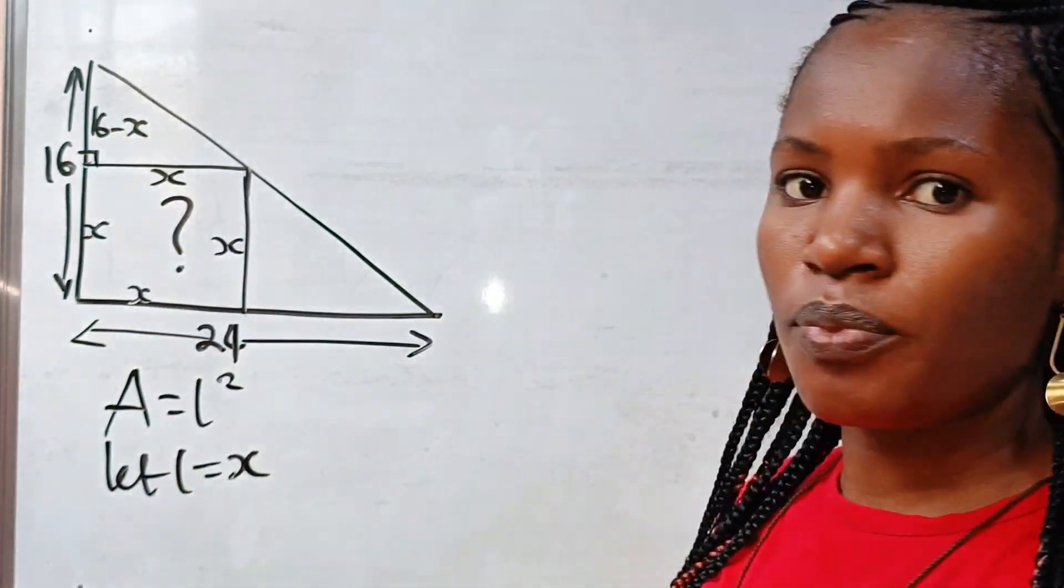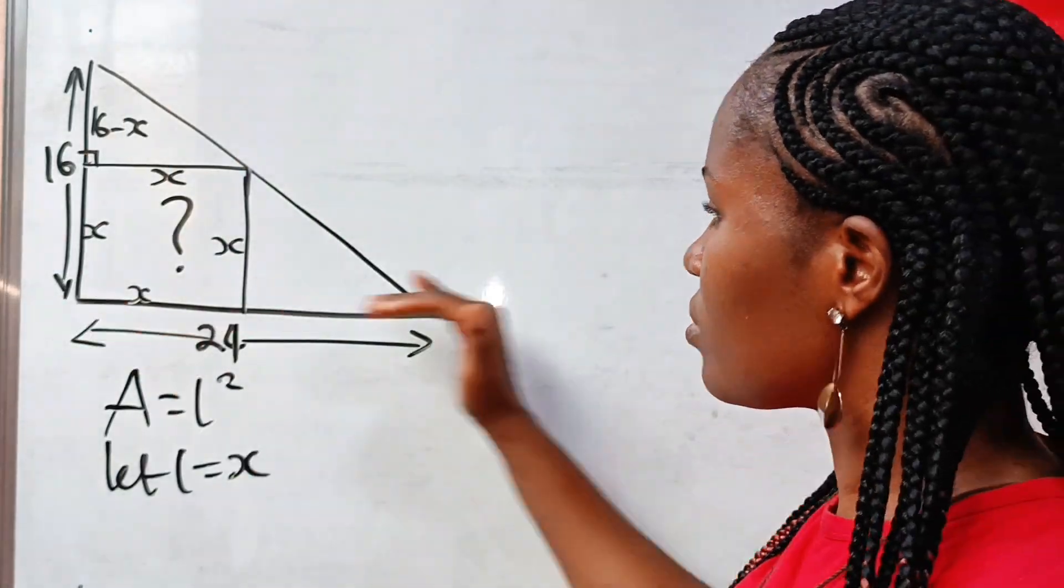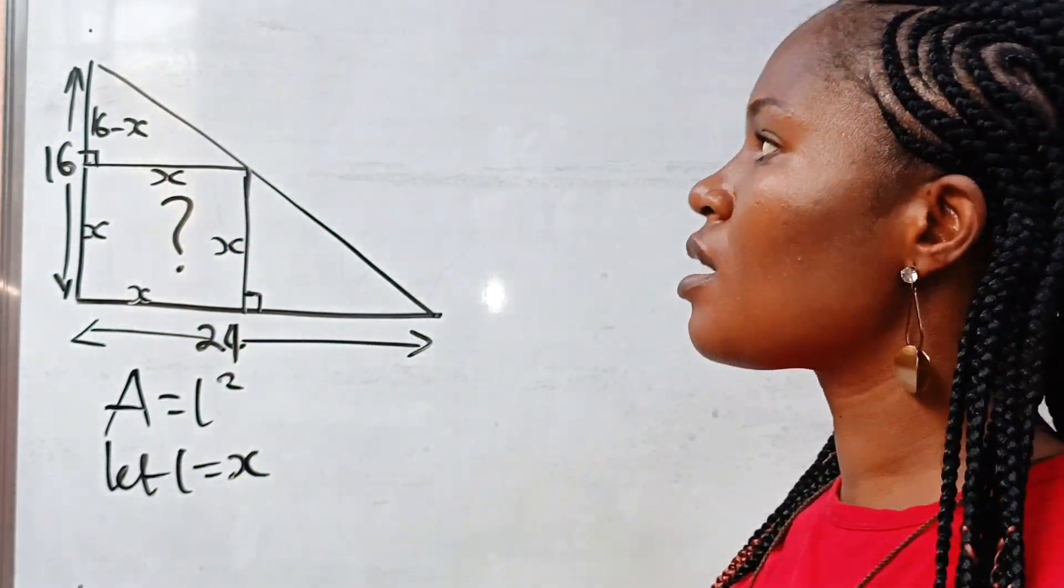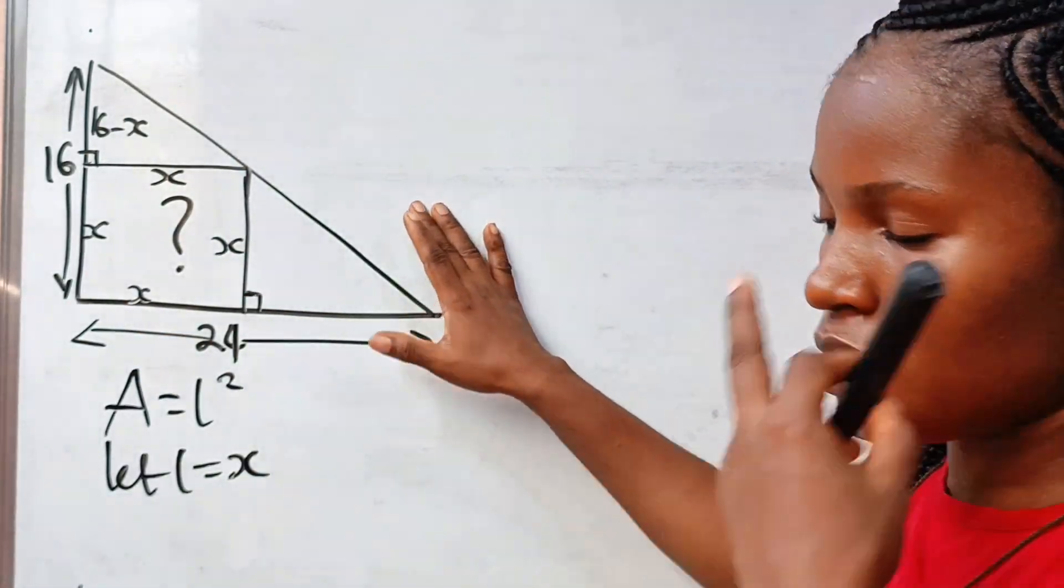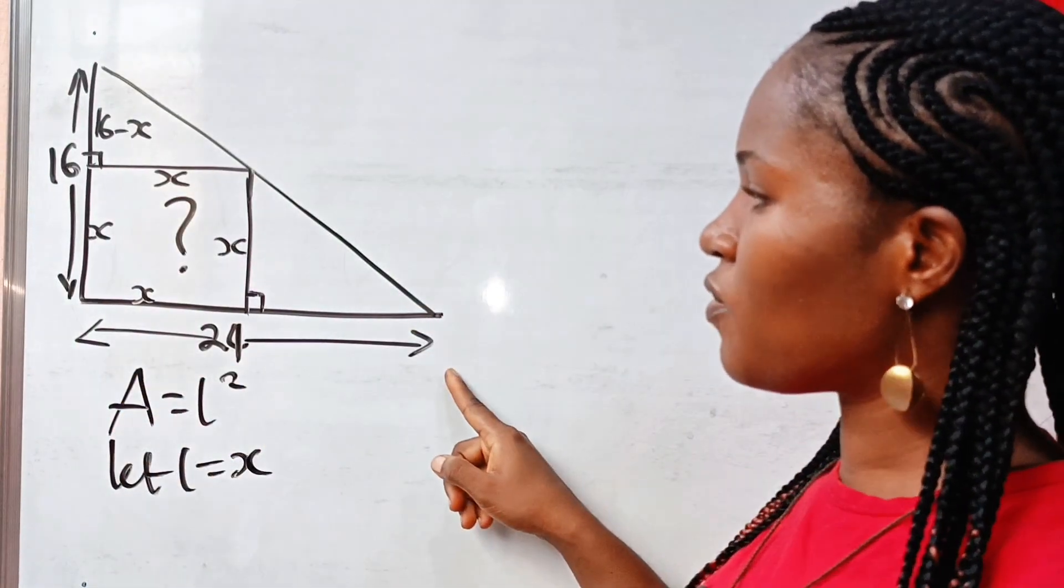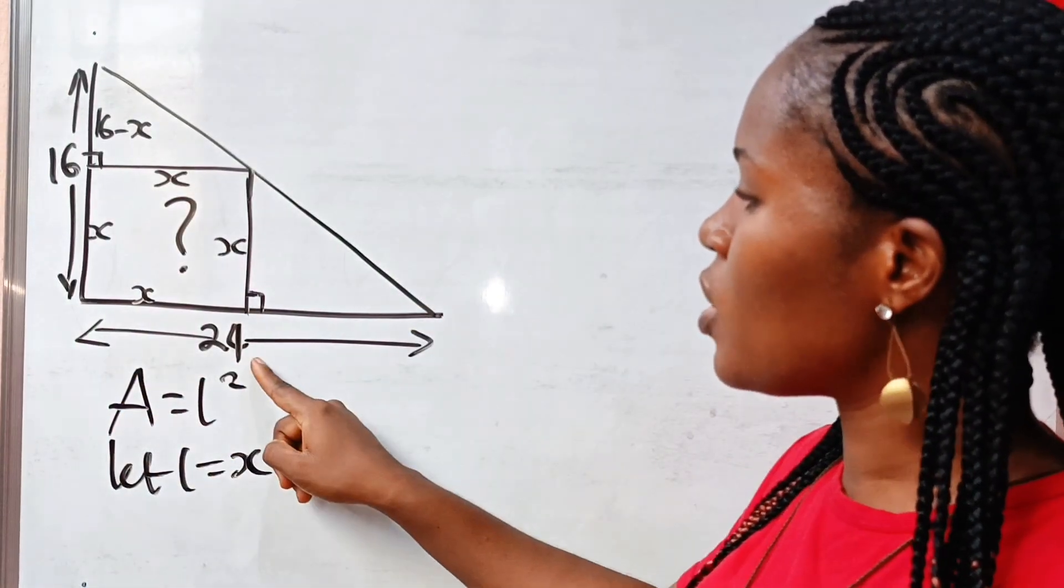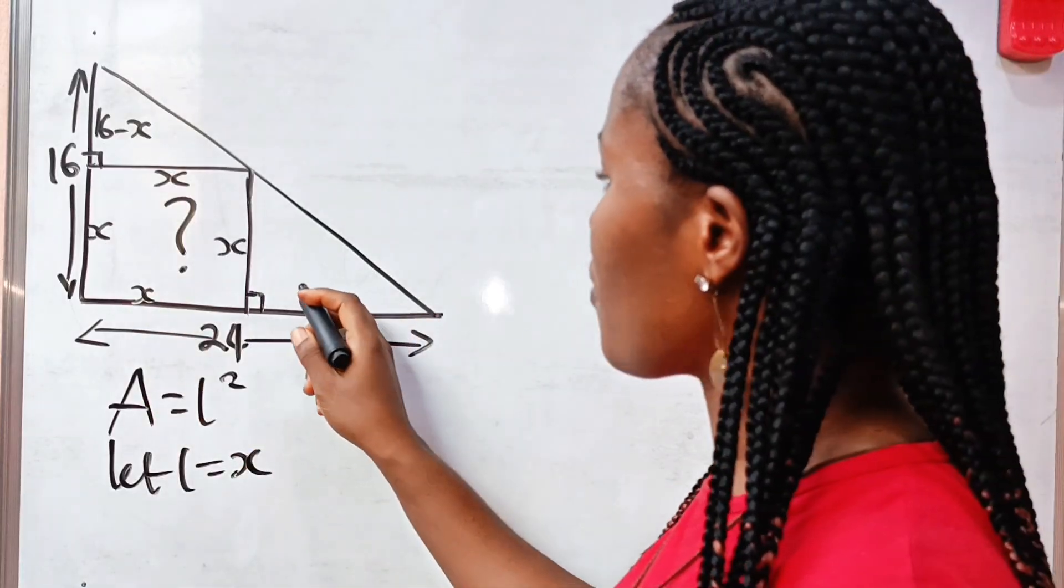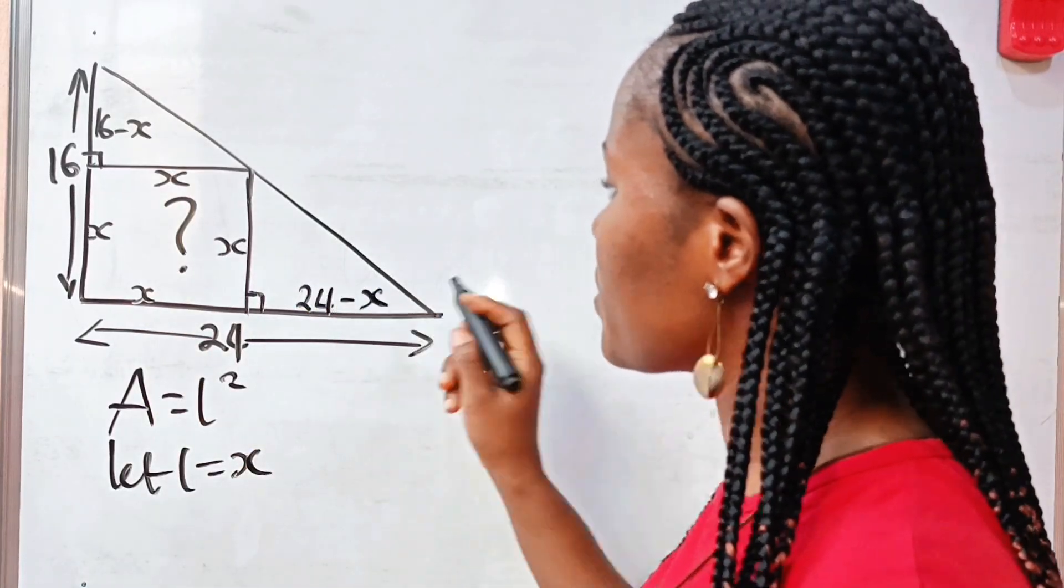Now, this is a right angle. If we say that from here to here is 24, it means that from here to here will be 24 minus X. So we have here as 24 minus X.